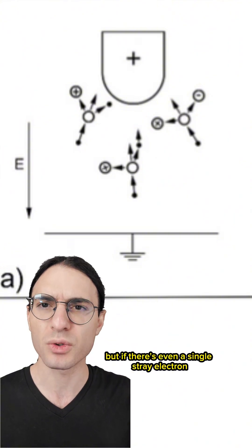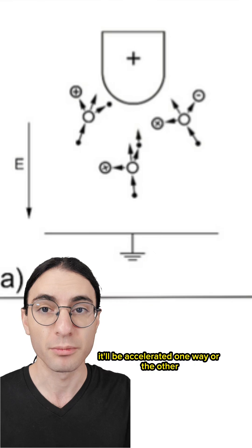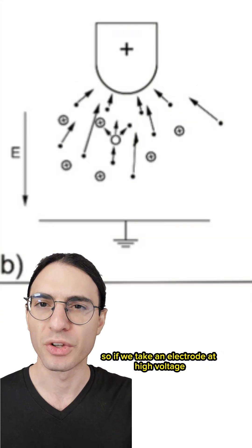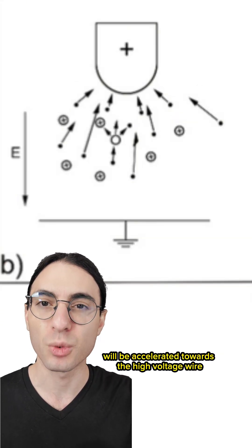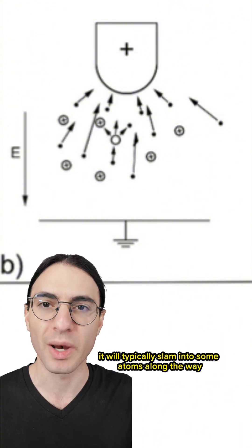But if there's even a single stray electron near the high-voltage wire, it'll be accelerated one way or the other. So if we take an electrode at high voltage and another that's grounded, that stray electron will be accelerated towards the high-voltage wire. In doing so, it will typically slam into some atoms along the way,